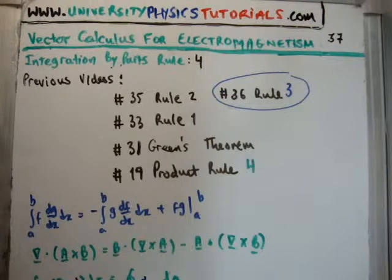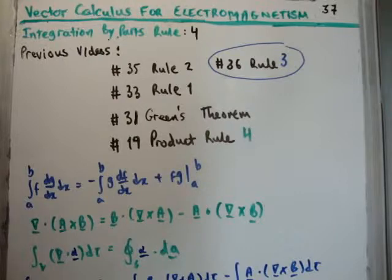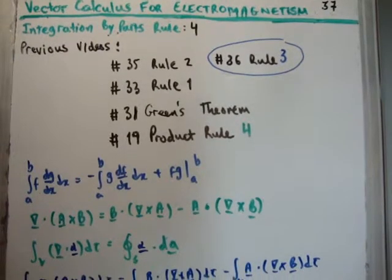So just to remind us what Green's theorem says. Let's say we take the integral over a volume of the divergence of a vector I'm going to call alpha. It's the same as the closed surface integral of alpha dot dA. Okay?